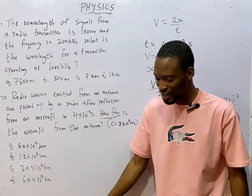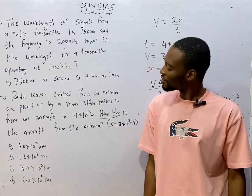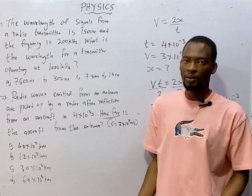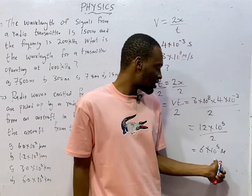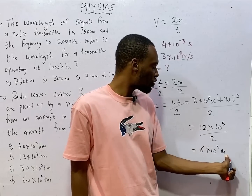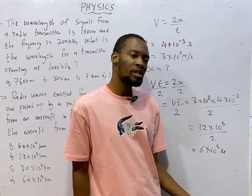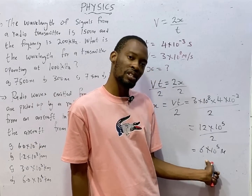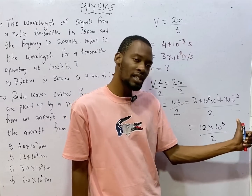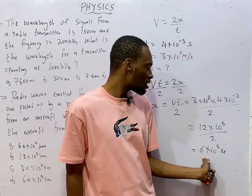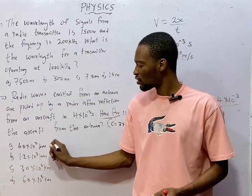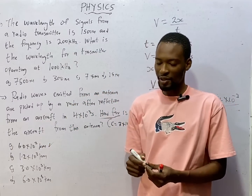Converting 6 × 10⁵ meters to kilometers by dividing by 1000 gives 6 × 10² kilometers. If you had picked 6 × 10⁵ kilometers directly, you would be wrong because our answer was in meters. So option A is the correct option. Always check units when answering physics questions.